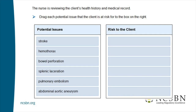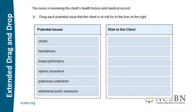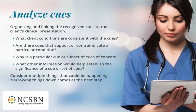The second item reads: 'The nurse is reviewing the client's health history and medical record — drag each potential issue the client is at risk for to the box on the right.' It's still extended drag and drop. We've identified the salient cues that require attention, and now it's more about what could they mean, how do they connect together, how does the puzzle fit? In our model, we call this 'analyze cues' — it's about the meaning and connections among those various cues.